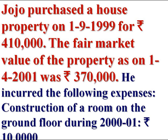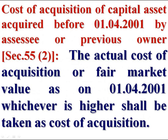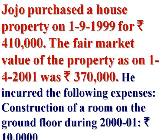George purchased the house property on 1st September 1999. If an assessee has purchased any asset before 1st April 2001, the law states that the actual cost of acquisition or the fair market value on 1st April 2001, whichever is higher, shall be taken as cost of acquisition. The asset was acquired for rupees 4 lakh 10,000 and the fair market value on 1st April 2001 was rupees 3 lakh 70,000. Whichever is higher — the highest amount is rupees 4 lakh 10,000 — it is the cost of acquisition.